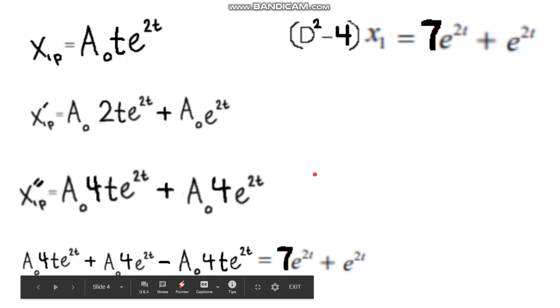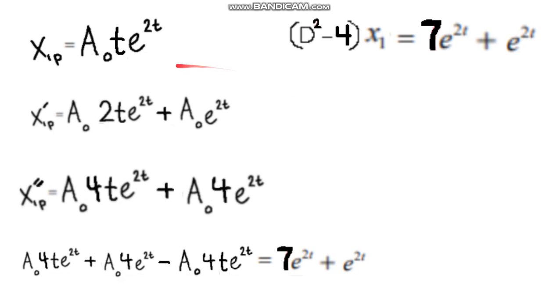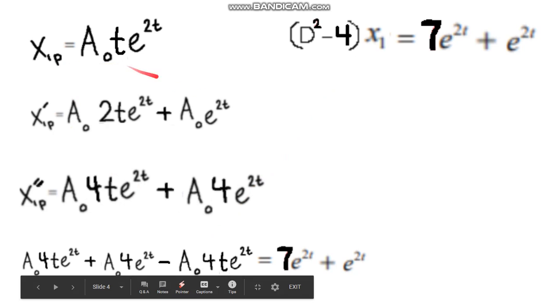Now, we want to take the derivative of our particular solution twice, because we're going to be plugging it into here. And when we take the derivative, x1 goes over here. So you're going to have negative 4, and then whatever x1 is, this. And then x double prime goes into here,